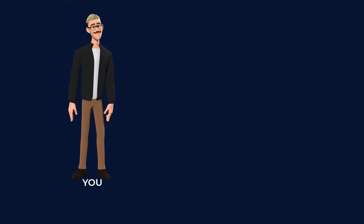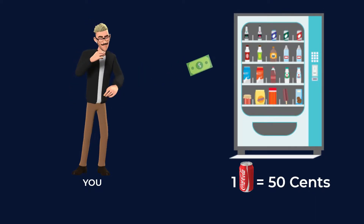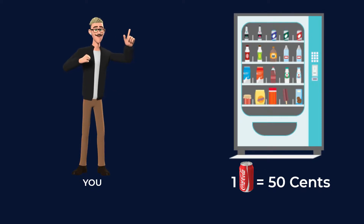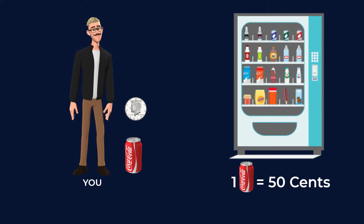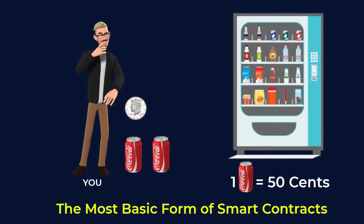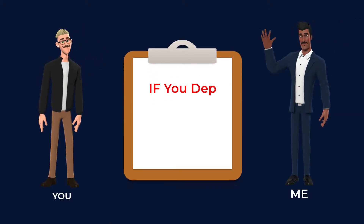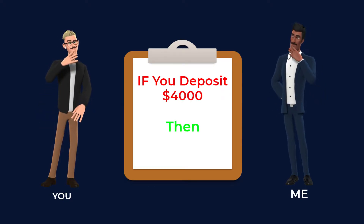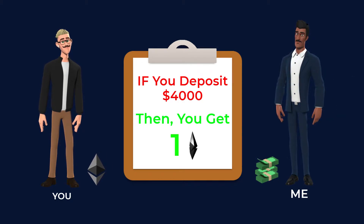To understand what that means, let's imagine a snacks vending machine. This machine sells a can of Coke for about half a dollar. If you put in a dollar and select Coke, then the machine automatically gives you a can of Coke and your change — 50 cents. This vending machine is the most basic form of smart contracts. We can write a smart contract code that says: if you give me $4,000, then you will get one Ethereum. This swap will be done automatically without any intervention.